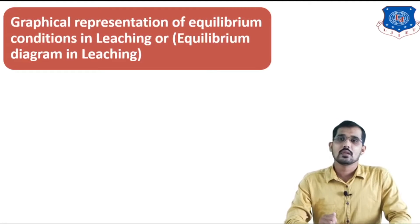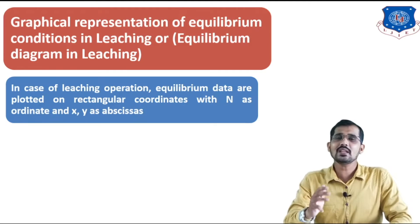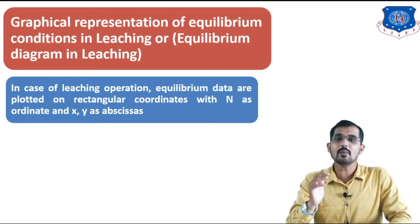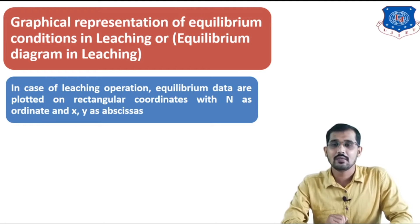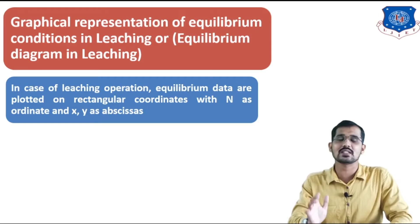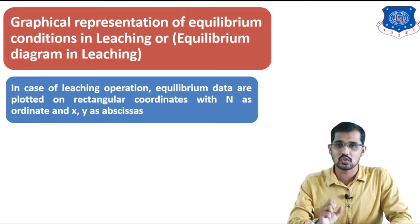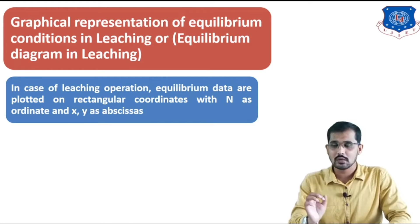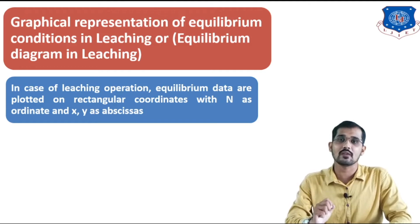This is the graphical representation of the equilibrium diagram in leaching. In the case of the leaching operation, equilibrium data are plotted on a rectangular coordinate where we plot N versus x and y. N is nothing but the amount of the insoluble per kg of the solution, and x and y are nothing but the weight fraction of the solute which we want to remove in the overflow and underflow respectively.